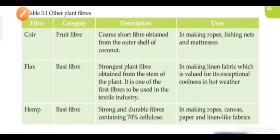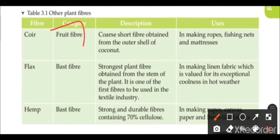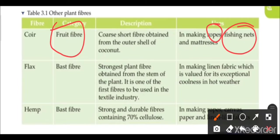Now let's discuss some other plant fibers. Next is coir — a coarse, short fiber obtained from the outer shell of the coconut. It is used in making ropes, fishing nets, and mattresses.